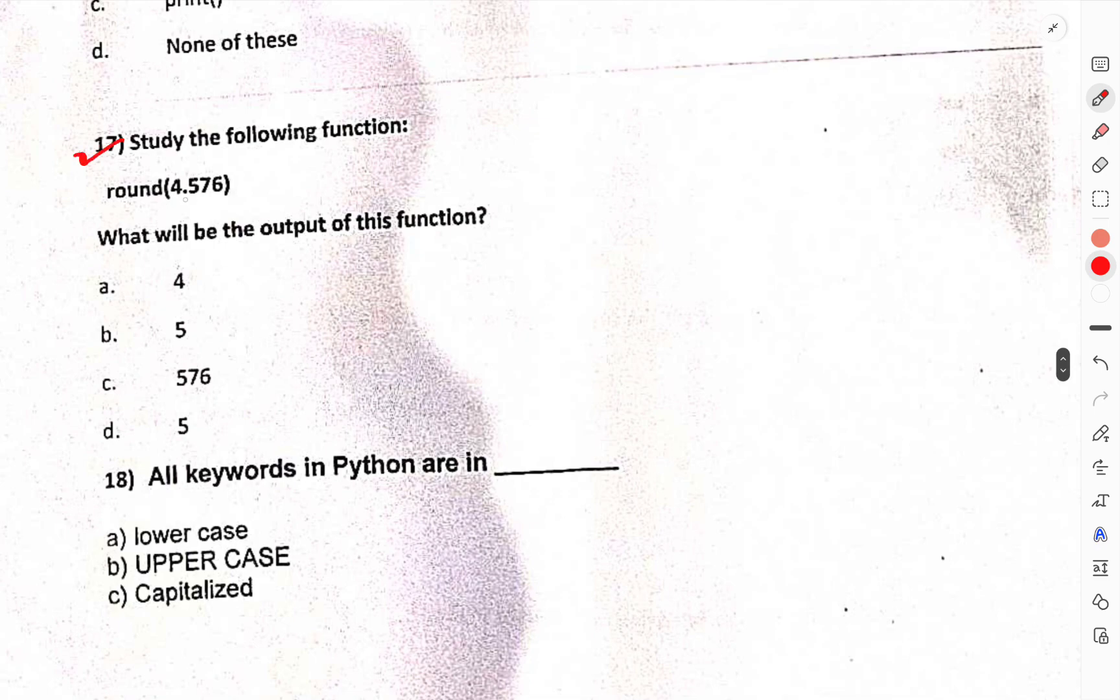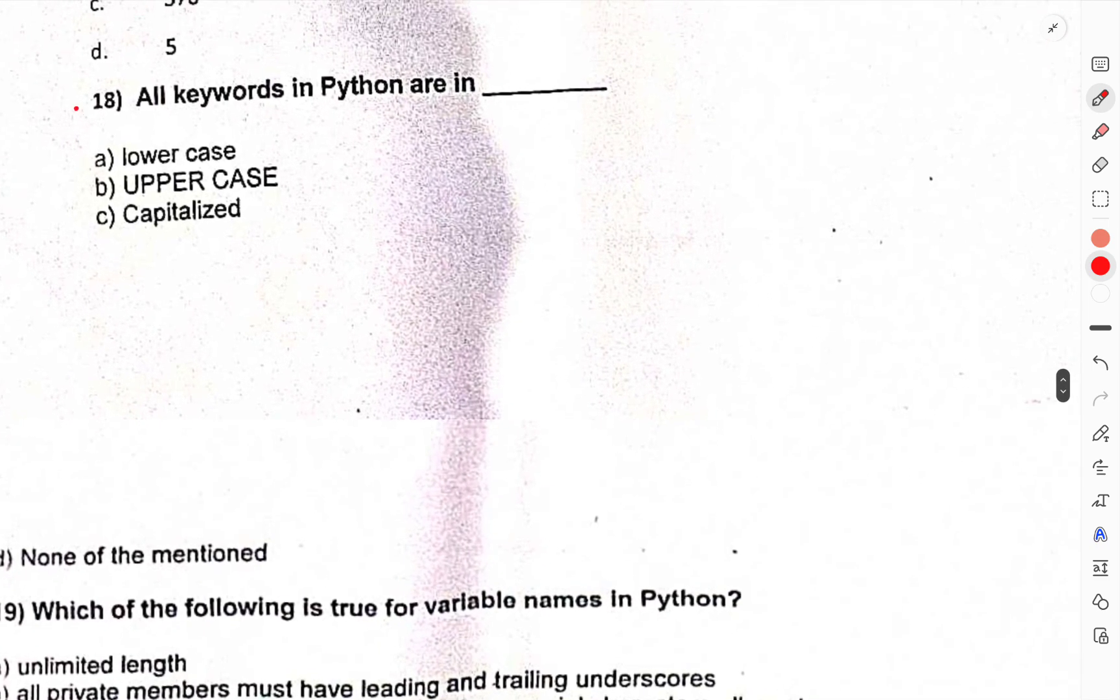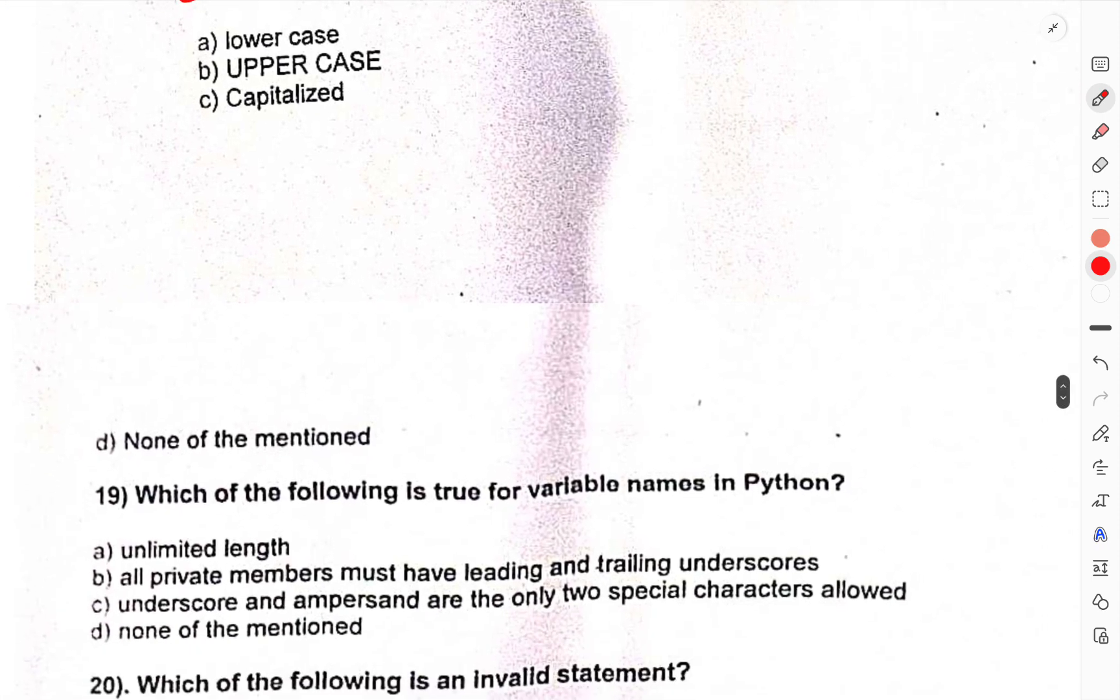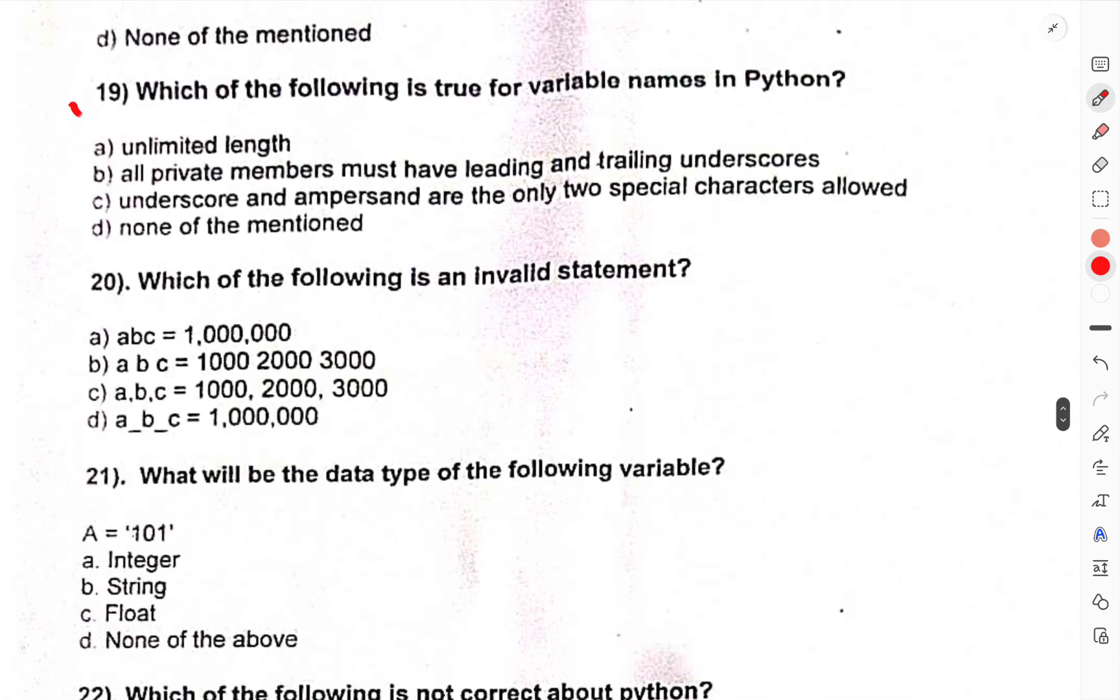Study the following function round(4.576). What will be the output of the function? All keywords in Python are? Which of the following is true for variable names in Python?